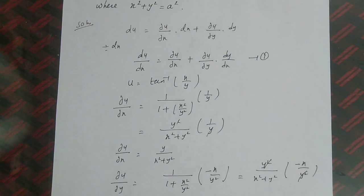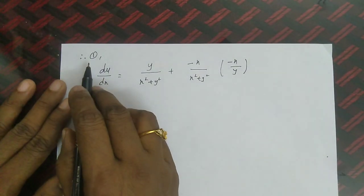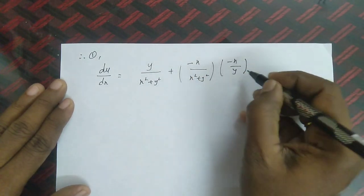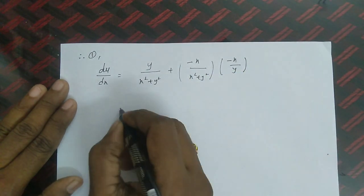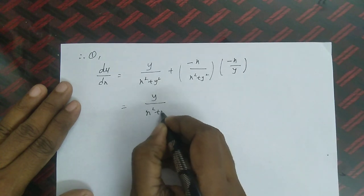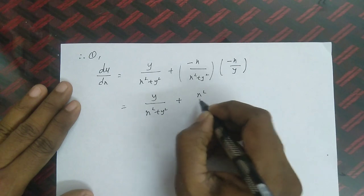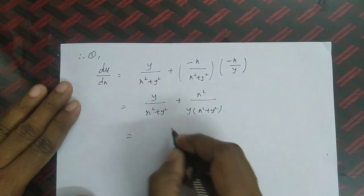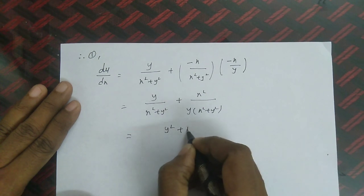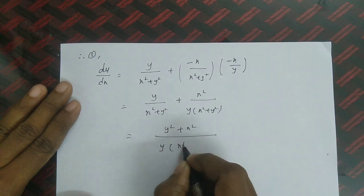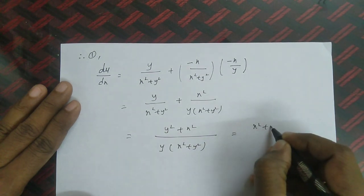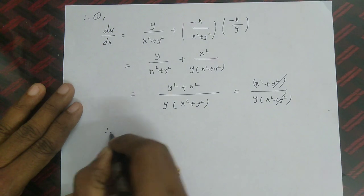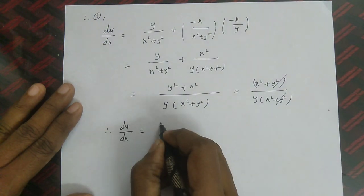Back to equation 1, substituting all values: du/dx = y/(x²+y²) + (-x/(x²+y²))·(-x/y). The two negatives become positive, giving y/(x²+y²) + x²/(y(x²+y²)). Taking LCM: (y² + x²) / (y(x²+y²)). The (x²+y²) cancels, so du/dx = 1/y.